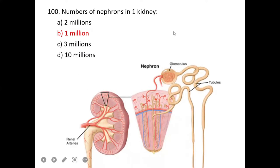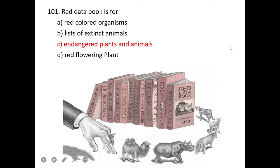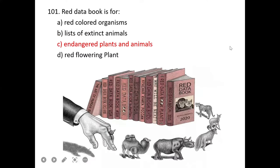Red data book is for endangered species. Red data book provides data on endangered species, plants, and animals.